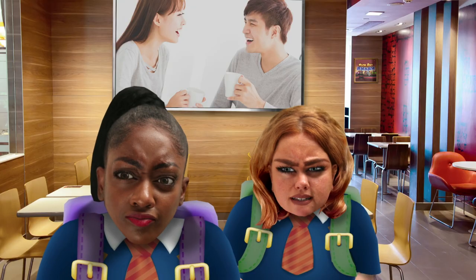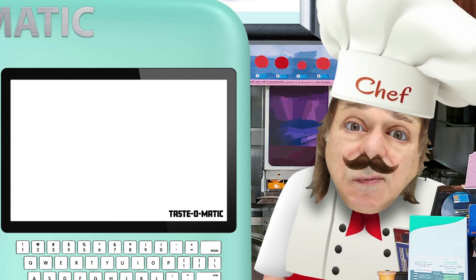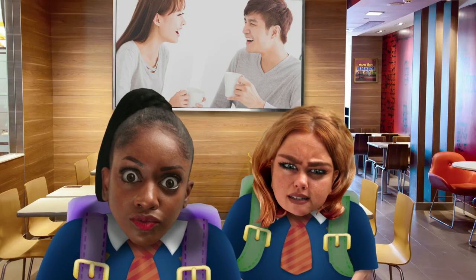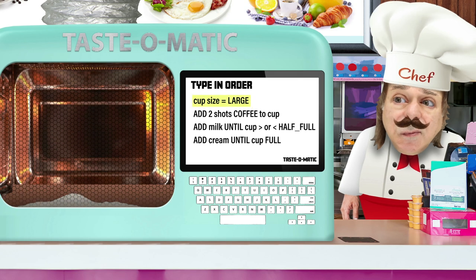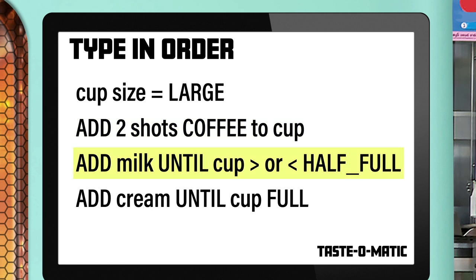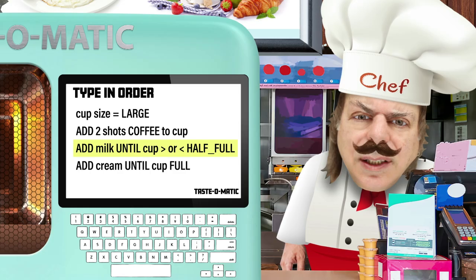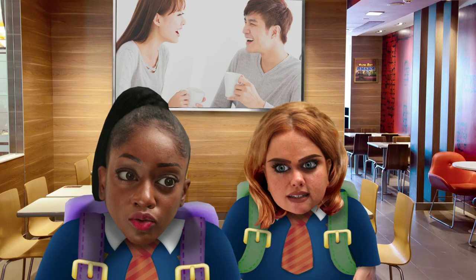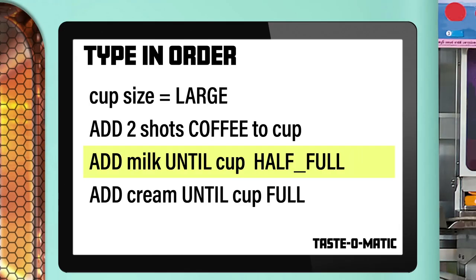Logic error. But the program worked fine. A program with a logic error will still work, but it won't do what you expected it to. Check it again — it can have any number of causes. Cup size large — fine. Two shots coffee — great. Add milk until more or less half full? But that's all I wanted, more or less. I know what you meant, but a computer takes it literally. How about: add milk until equal to half full? Try that.